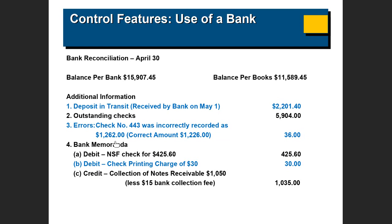These adjustments are all on your book side. Now on the bank side, the first problem is an NSF check of $425.60.